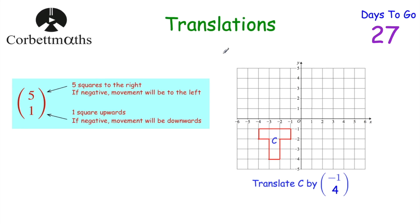Let's look at our first transformation: translations. Whenever we translate a shape we just move it or slide it across the grid — so many squares to the right and so many squares up, or to the left and down. When describing translations we use a translation vector, with one number above another in brackets. For example, (5, 1) means translate five squares to the right and one square up. The top number tells us right or left: positive means right, negative means left. The bottom number tells us up or down: positive means up, negative means down.